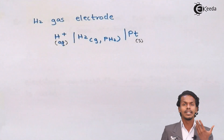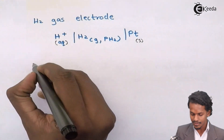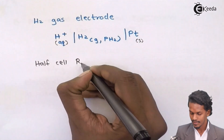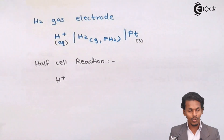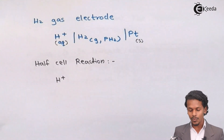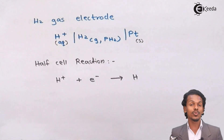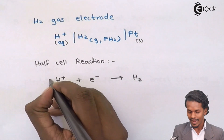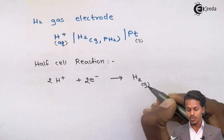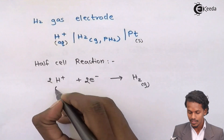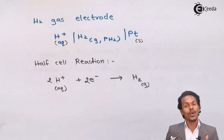If H⁺ undergoes a reduction process, we can write the half-cell reaction as follows: H⁺ accepts one electron to form H as an atom. Since H₂ gas is being used, we balance the equation: 2H⁺ + 2e⁻ → H₂. This is the half-cell reaction for the H₂ gas electrode, which is an example of a non-metal non-metal ion electrode.